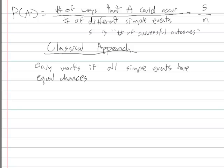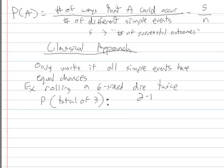For example, if I was rolling a six-sided die, let's say we roll it twice. And we want to know what's the probability of a total of three. The number of ways I could get a total of three - the simple events that would make that up is I could roll a two then one, or a one and then two. They're the only two ways that I could get a total of three out of two rolls of this six-sided die.